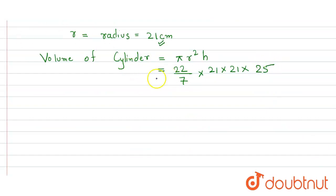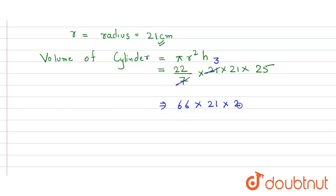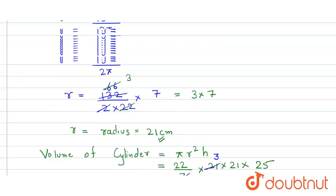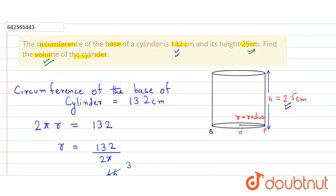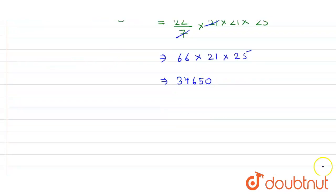Now we simply solve it. The 7 cancels with 21 to give 3. So 3 into 22 equals 66, and then 66 into 21 into 25. When we multiply this out we get 34,650, and the unit is centimeter cubed. So that's our answer: 34,650 cm³.